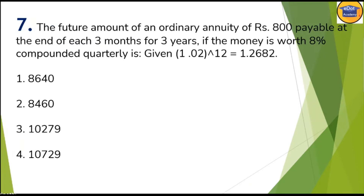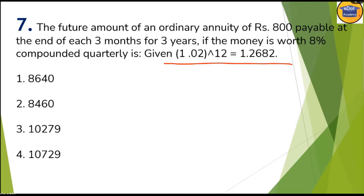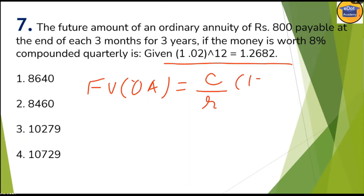Question seven: the future amount of an ordinary annuity of 800 payable at the end of each three months for three years, if the money is worth 8% compounded quarterly. They have given the value 1.02 to the power 12 to simplify calculation. You must remember the formula for future value of ordinary annuity: it is C divided by r, multiplied by (1 + r) to the power n minus 1. That is the future value of ordinary annuity.